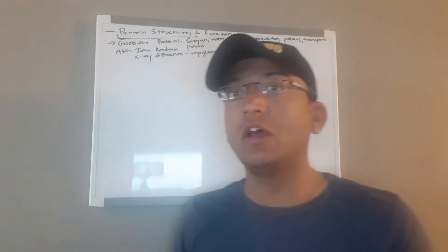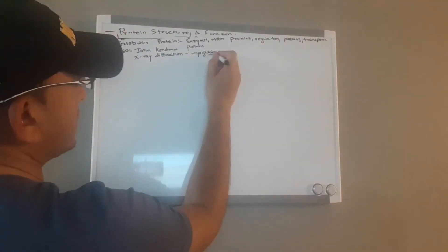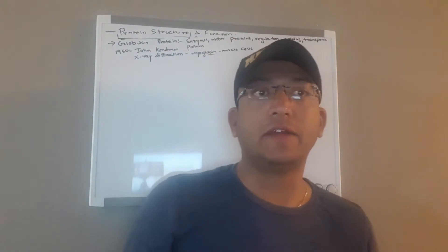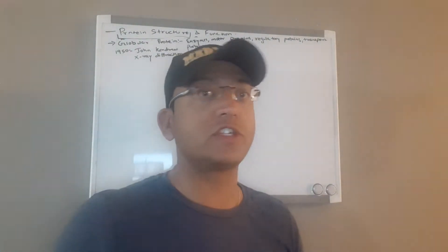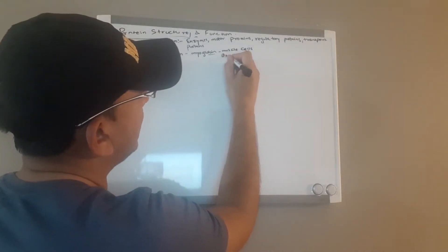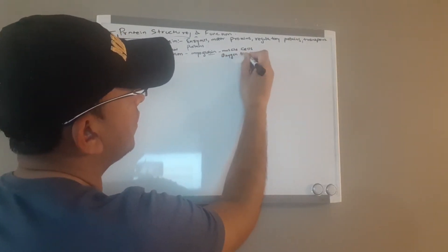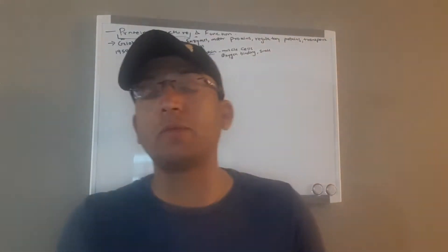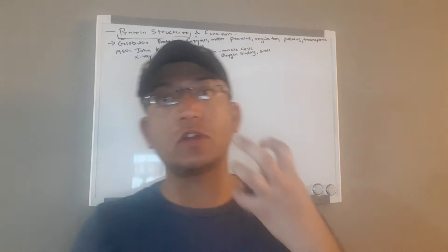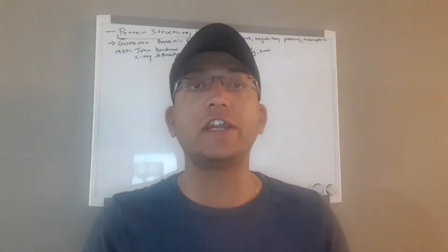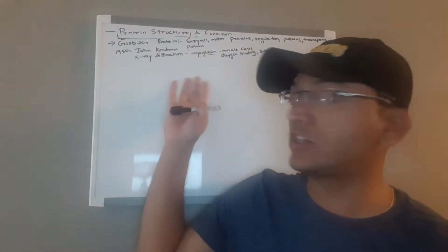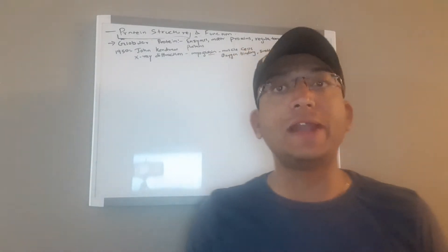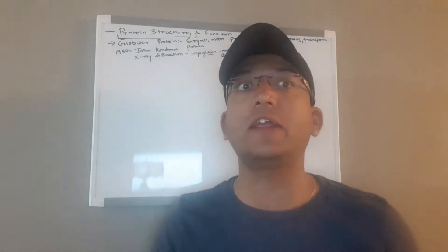Myoglobin is a relatively small oxygen-binding protein of muscle cells. The function of myoglobin is to store oxygen and to facilitate oxygen diffusion in rapidly contracting muscle tissue. So when the muscles are contracting, it facilitates oxygen diffusion.